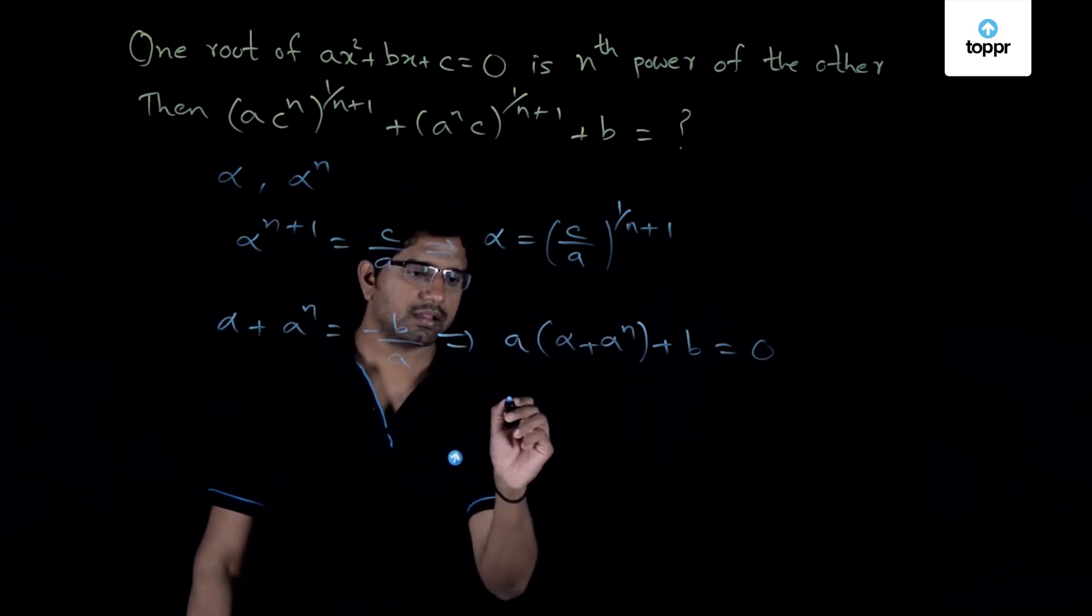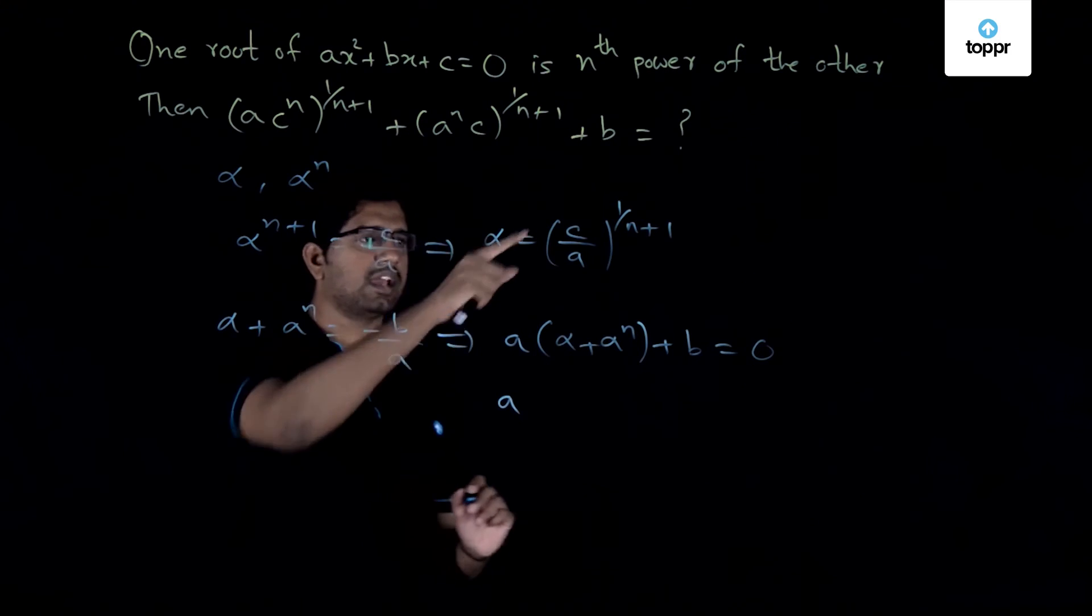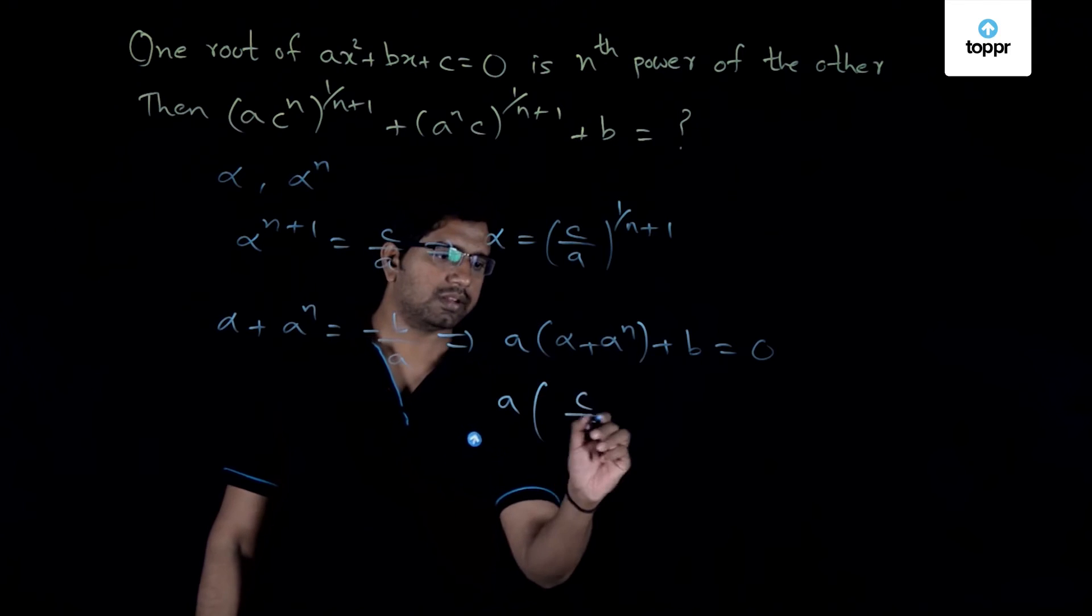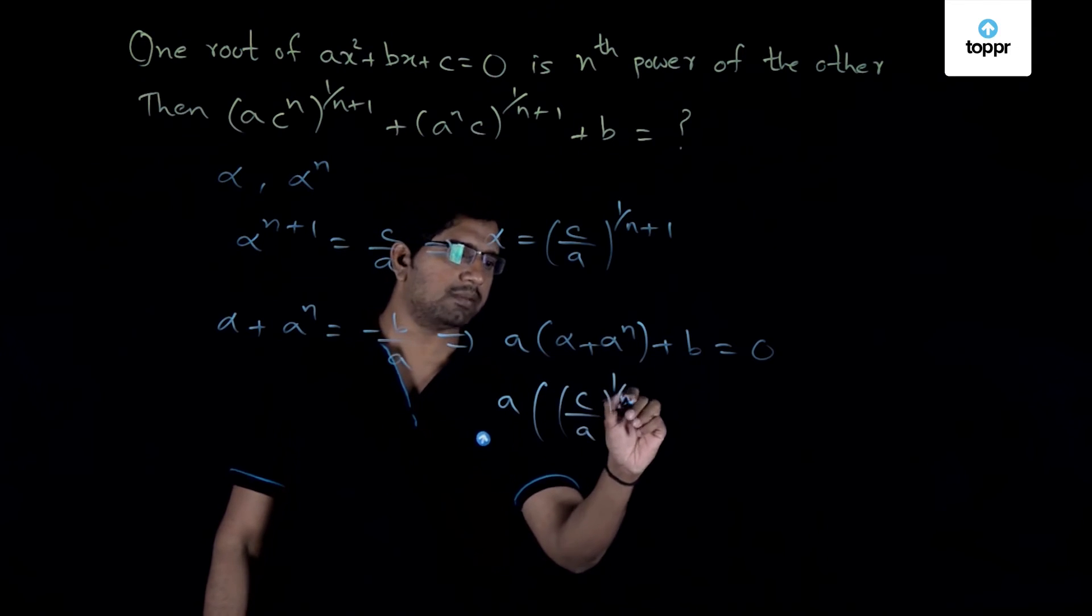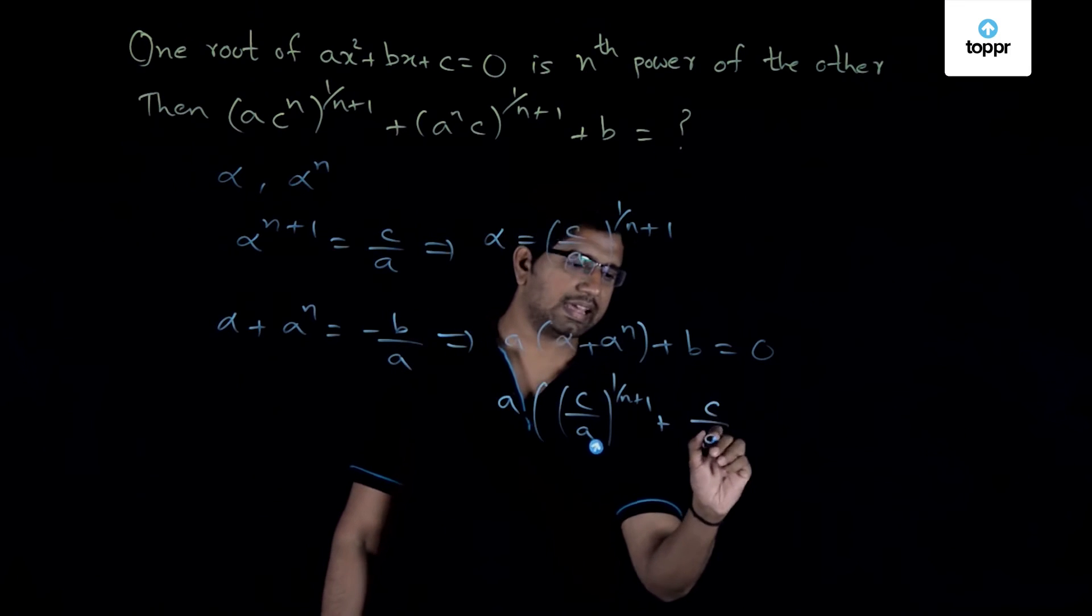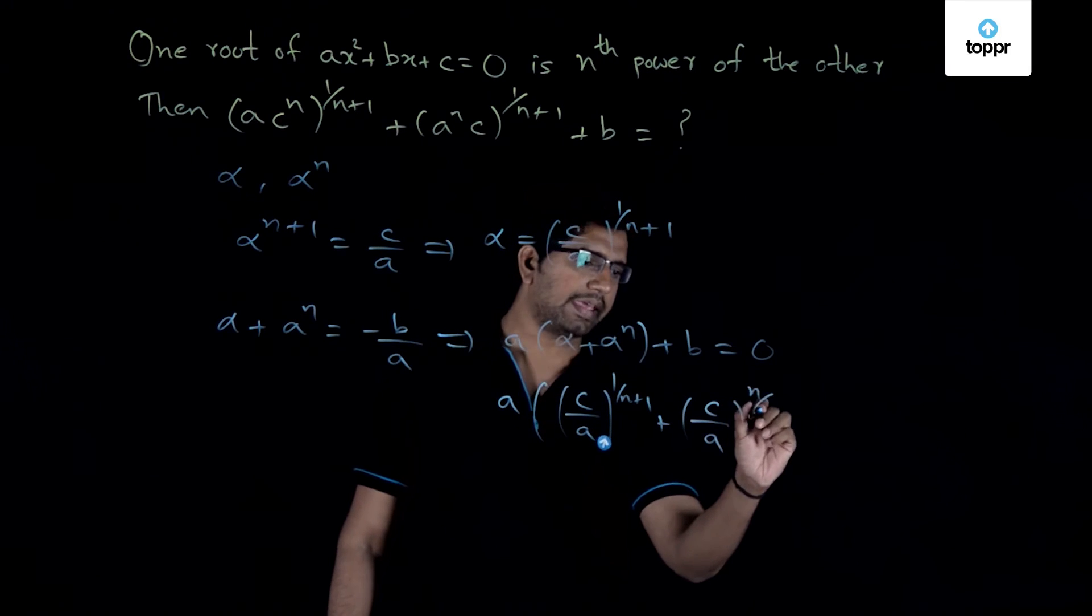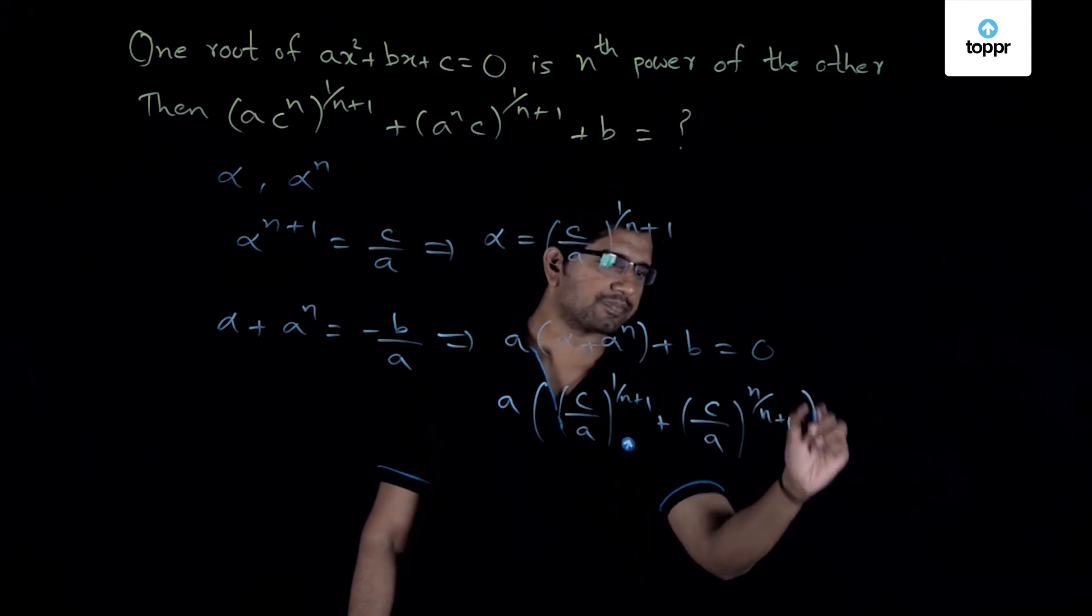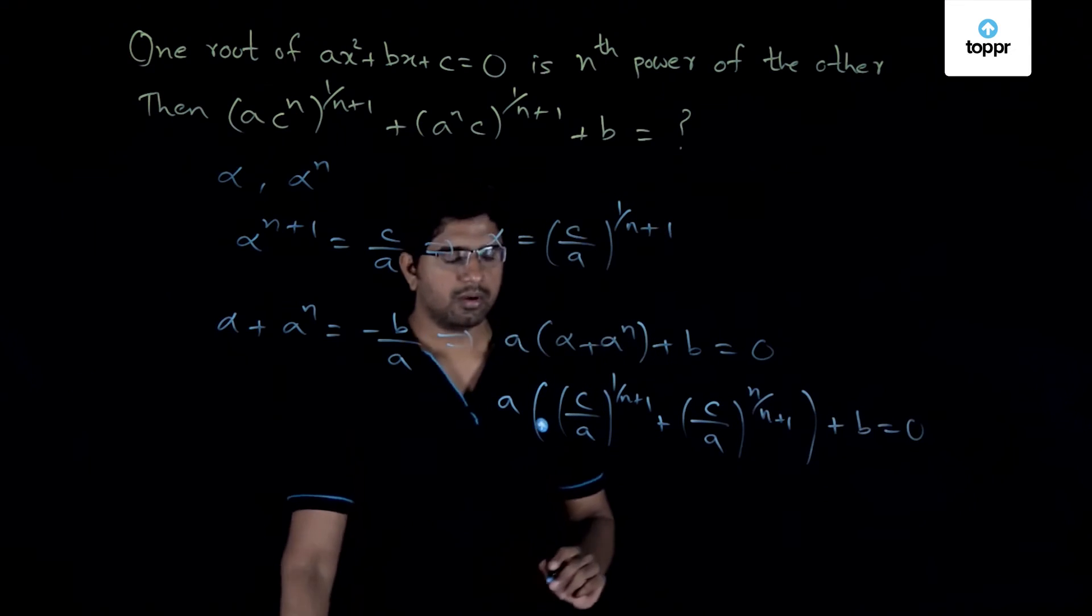So we have a times alpha. Alpha we have already got. So it is c by a times 1 by n plus 1 plus alpha power n which becomes c by a times n by n plus 1 plus b equals 0.